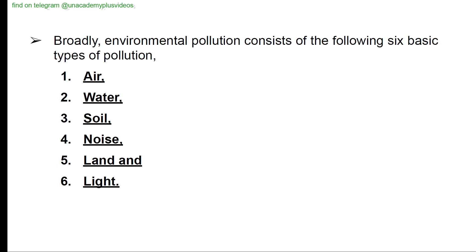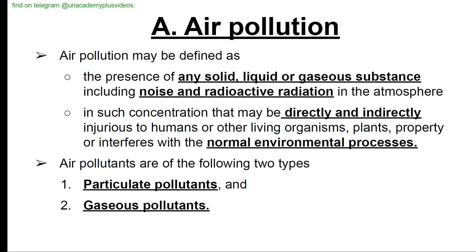Air pollution may be defined as the presence of any solid, liquid, or gaseous substance — including noise and radioactive radiation — in the atmosphere at such concentrations as may be directly or indirectly injurious to humans, other living organisms, plants, property, or normal environmental processes. Air pollutants are of two types: particulate pollutants and gaseous pollutants.